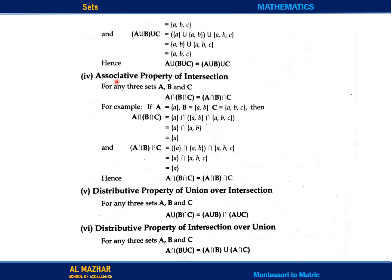Now the associative property of intersection. In the associative property, we also have three sets: A intersect (B intersect C) is equal to (A intersect B) intersect C. For example, A equals {a}, B equals {a, b}, C equals {a, b, c}. We see that in all three sets the common element is {a}. So A intersect B intersect C gives {a}. And if we take (A intersect B) intersect C, the result is also {a}. Therefore A intersect (B intersect C) equals (A intersect B) intersect C — both are equal.